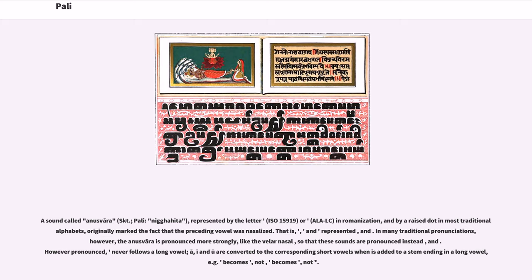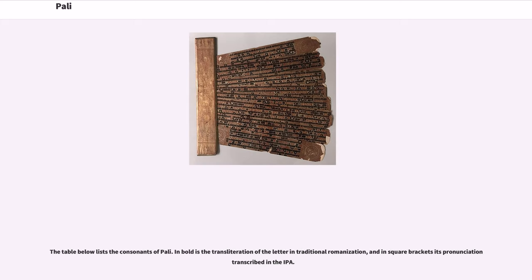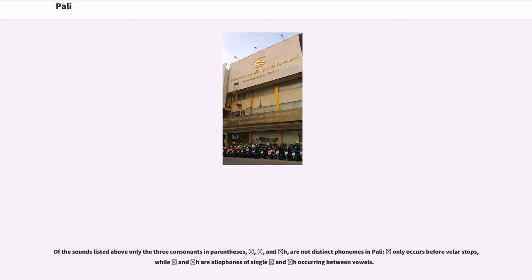The anusvara never follows a long vowel; A, I, and U are converted to the corresponding short vowels when it is added to a stem ending in a long vowel. Of the consonants of Pali, only three consonants — n, l, and lh — are not distinct phonemes: n only occurs before velar stops, while l and lh are allophones of single d and dh occurring between vowels.